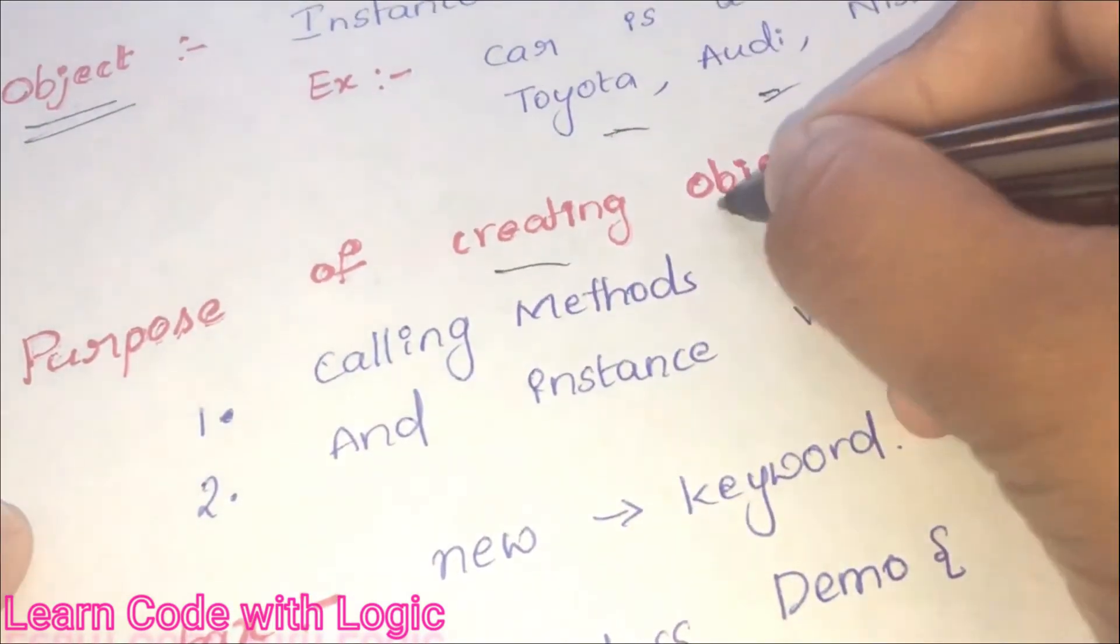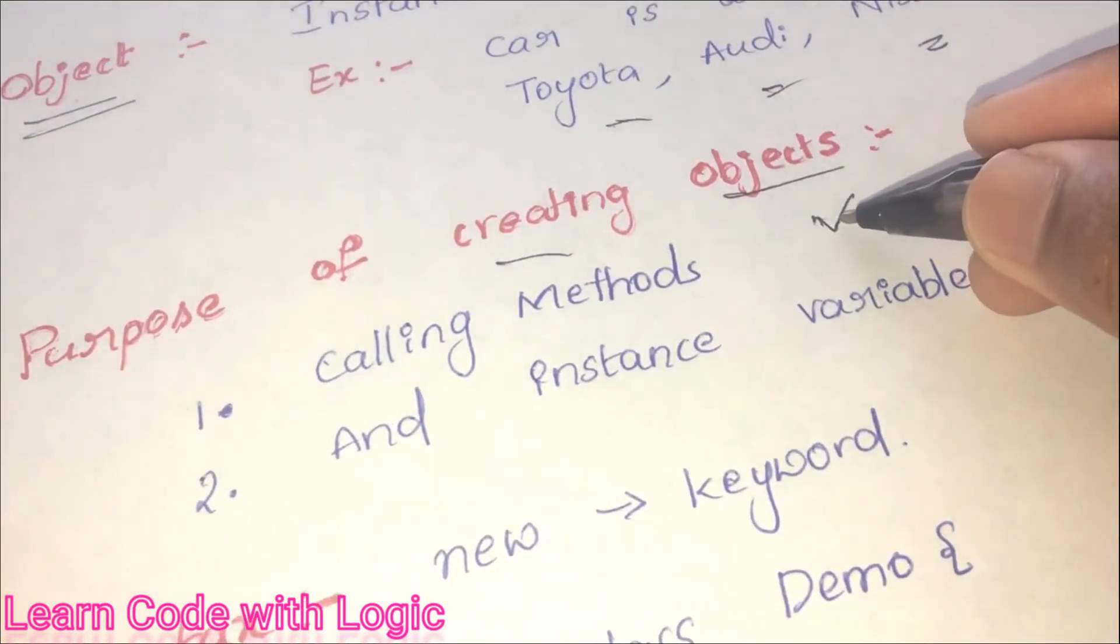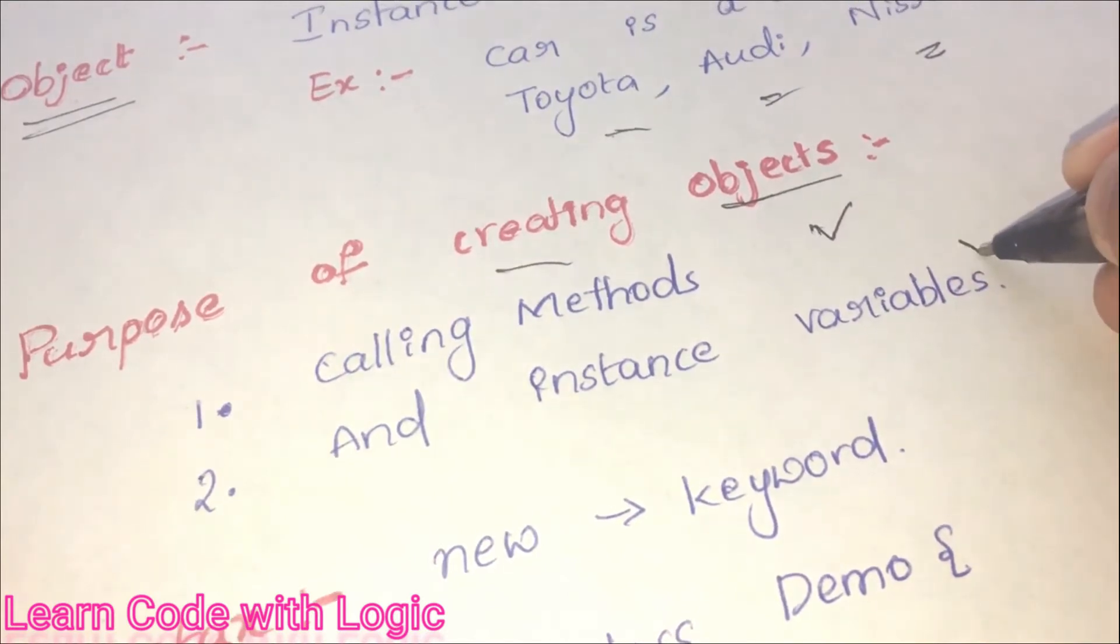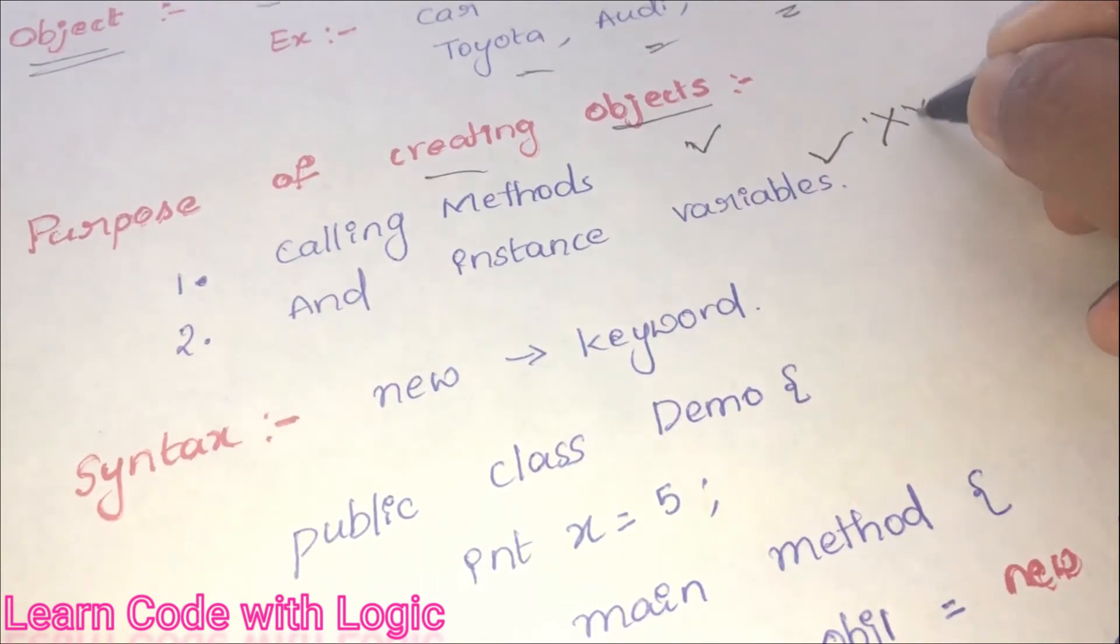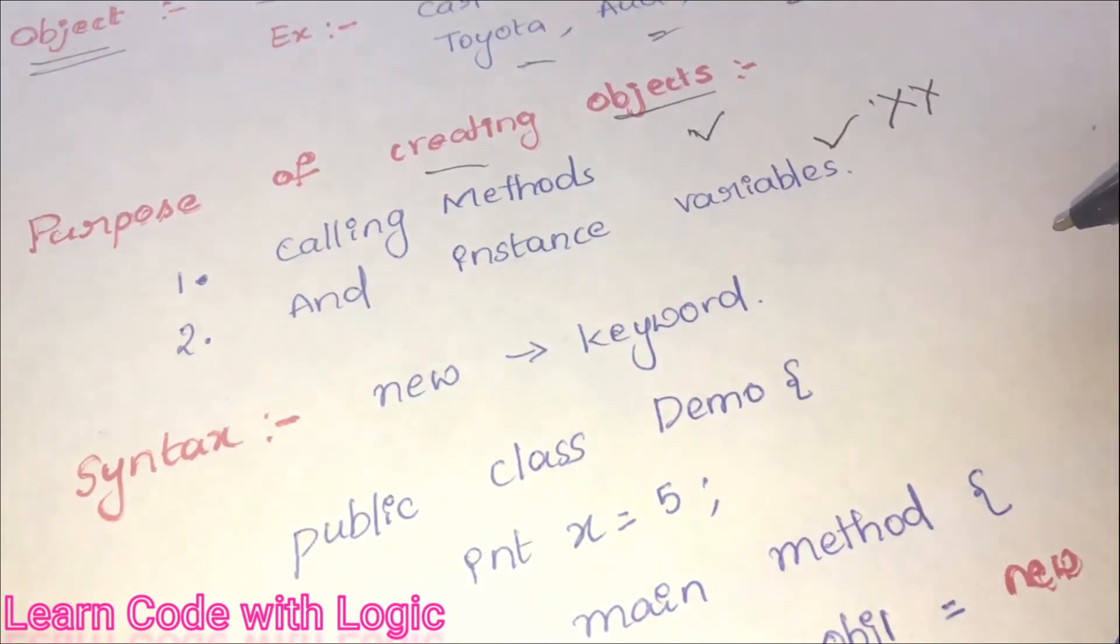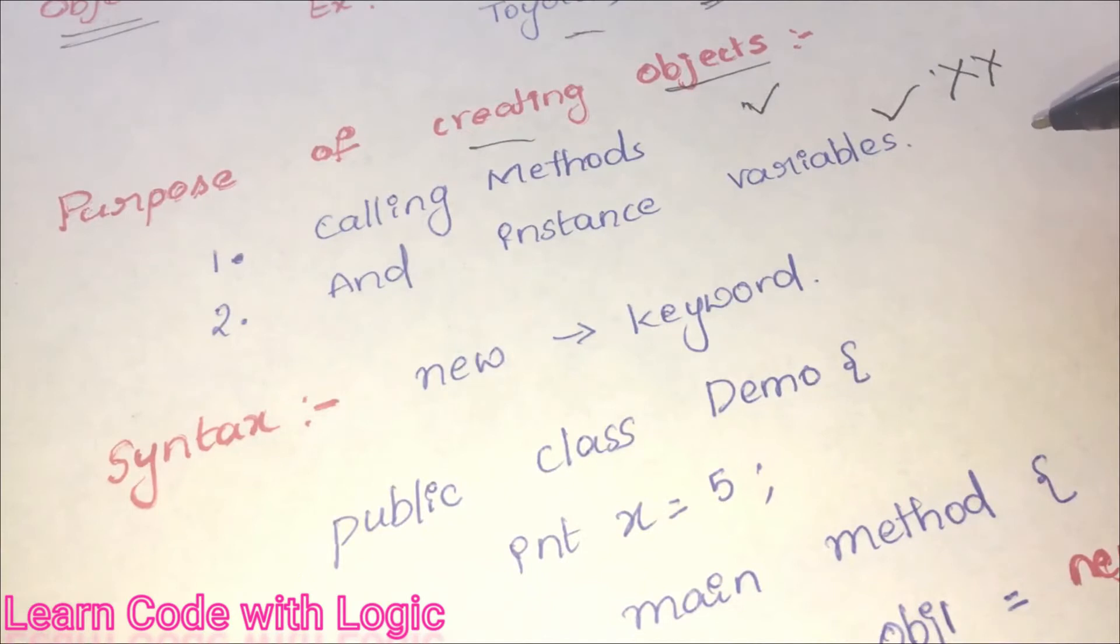Now let's understand why we create objects. The purpose of creating objects: objects are for calling methods and calling instance variables. Without having objects, it's not possible to call instance variables or methods. We will understand more once we look into the coding examples.